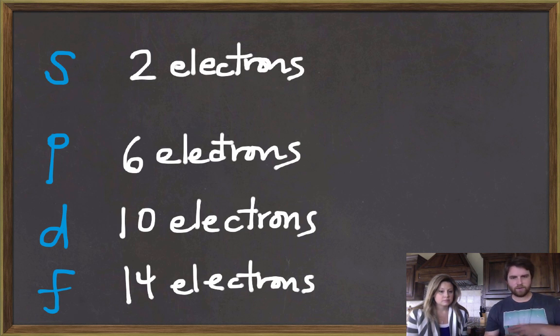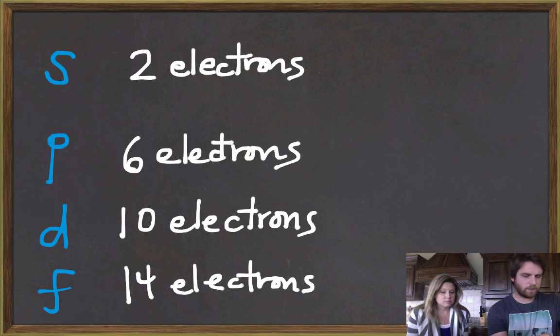Now there are different amounts. There's not just one s orbital, one p, one d, and one f. There's a whole bunch of different ones, which we'll get into a little bit later. But we just wanted to point out there are different orbitals with different shapes.